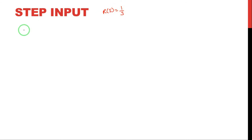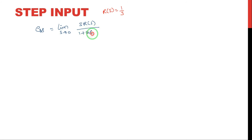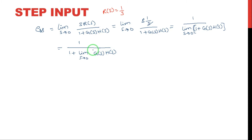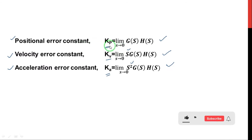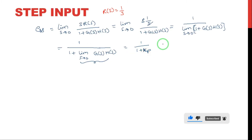For step input, R(S) = 1/S. The steady state error ESS is equal to limit S tends to 0 of S × R(S) divided by 1 + G(S)H(S). Substituting 1/S for R(S), the S terms cancel. The limit as S tends to 0 of G(S)H(S) is the positional error constant Kp. So we can write steady state error ESS = 1 / (1 + Kp).